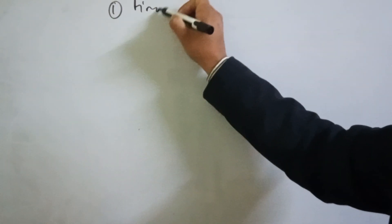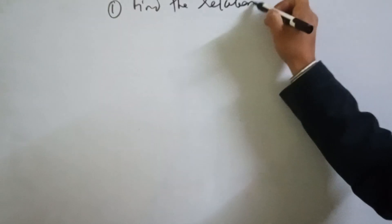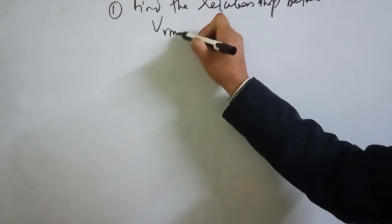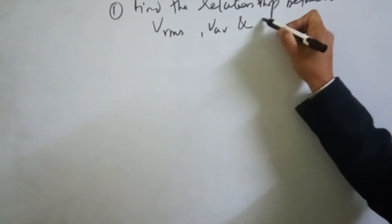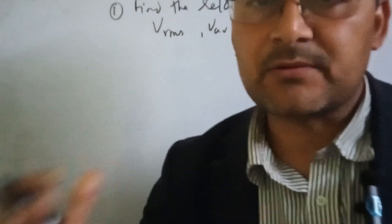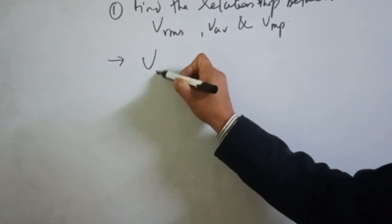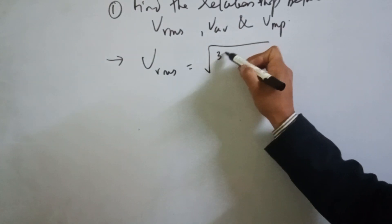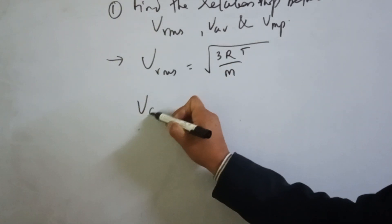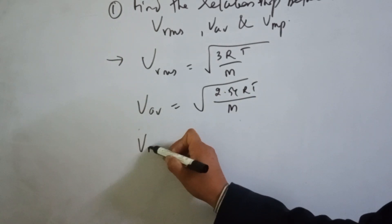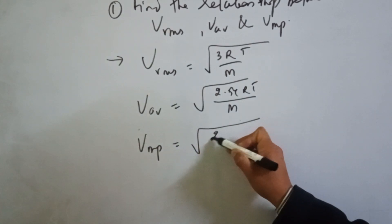Problem 1: Find the relationship between Vrms, Vav, and Vmp. Vrms equals root under 3RT/M. Vav equals root under 8RT/πM, approximately 2.54RT/M. Most probable velocity equals root under 2RT/M.